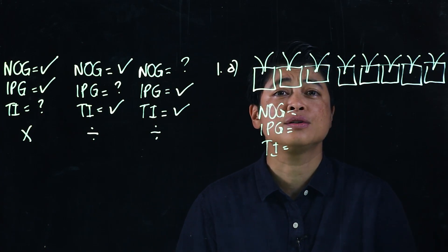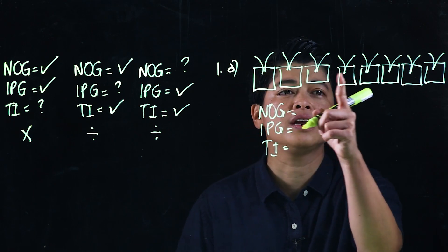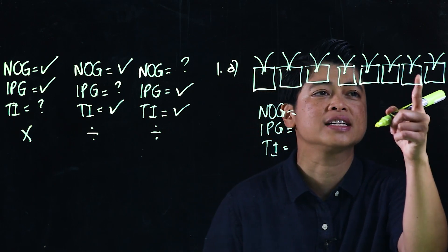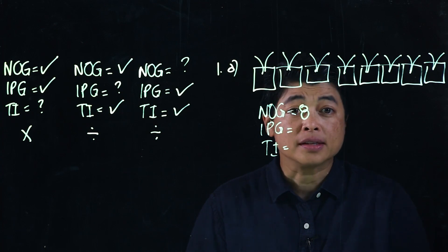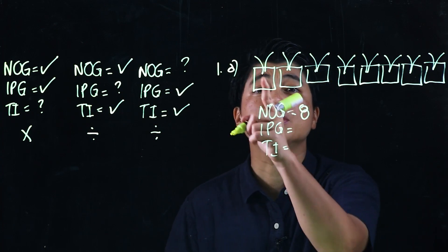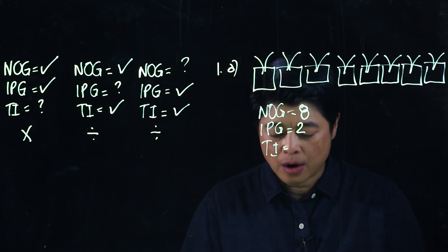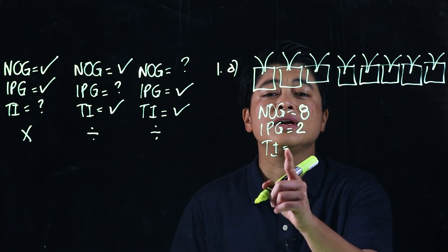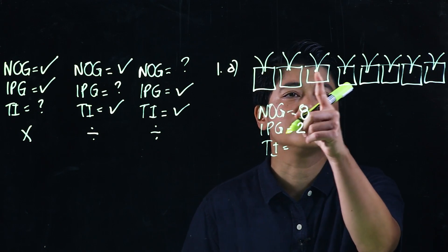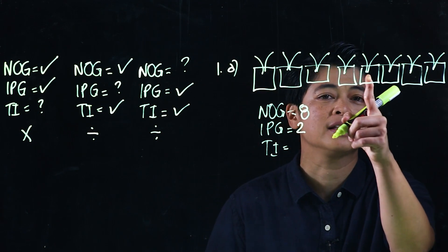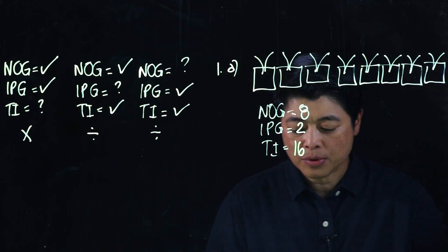The number of groups would be eight flower pots — one, two, three, four, five, six, seven, eight. The items per group would be two flowers in each. Then when we add them up: one, two, three, four, five, six, seven, eight, nine, ten — up to sixteen total items.